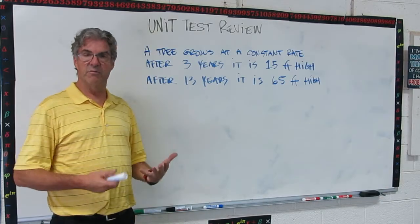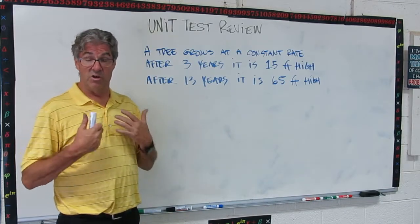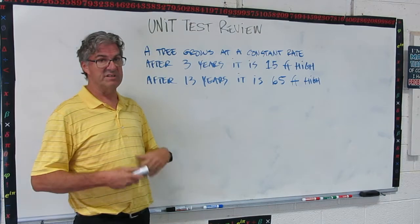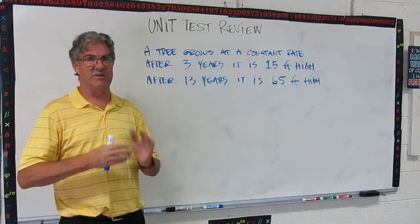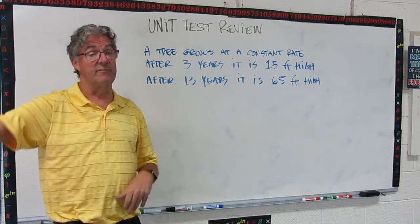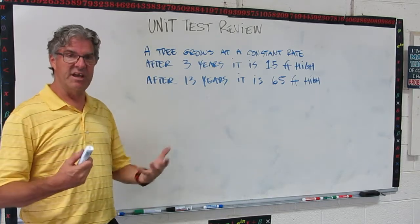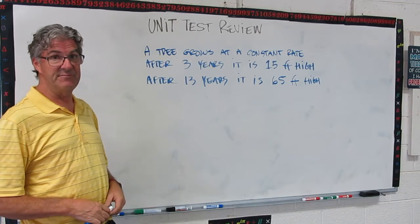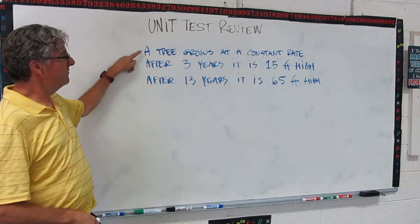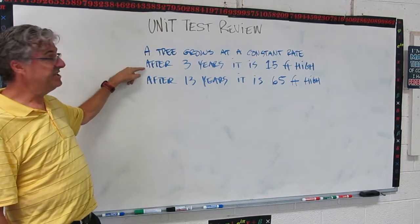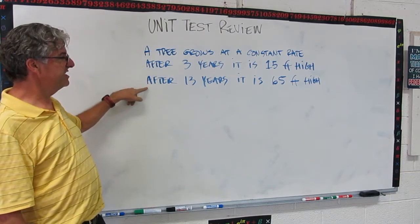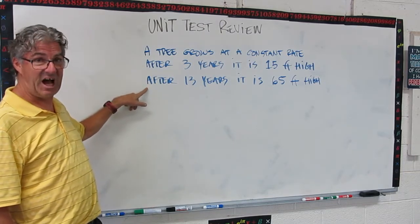Okay, we know that a lot of the IB style questions have multiple parts that can be kind of long. I can't do very many of those in this video, otherwise it would stretch on and be too long of a review video. But let's take a look at one, and we'll try to hit all the points that they hit in these types of problems. So in this one, we've got a tree that grows at a constant rate. After three years, it's 15 feet high, and after 13 years, it's 65 feet high.